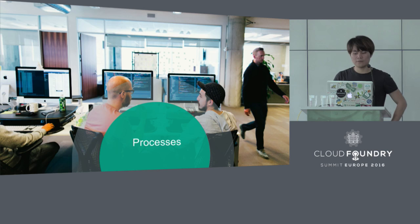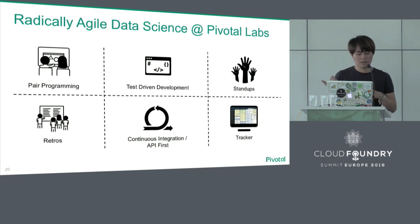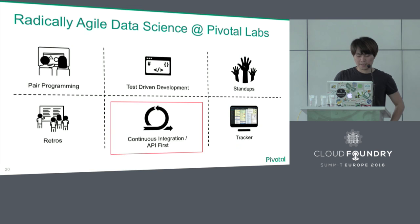As I already said, apart from the right technology, the right process also played a critical role in this project. I think everyone already attended the keynote talk today with Michael Nolte, who pointed out some of the practices we use. For example, pair programming — at Pivotal Labs we do a lot of pair programming, which means two people pairing together to solve one problem. We also have test-driven development, which ensures our code is always production-ready. In this talk I will focus specifically on API First.